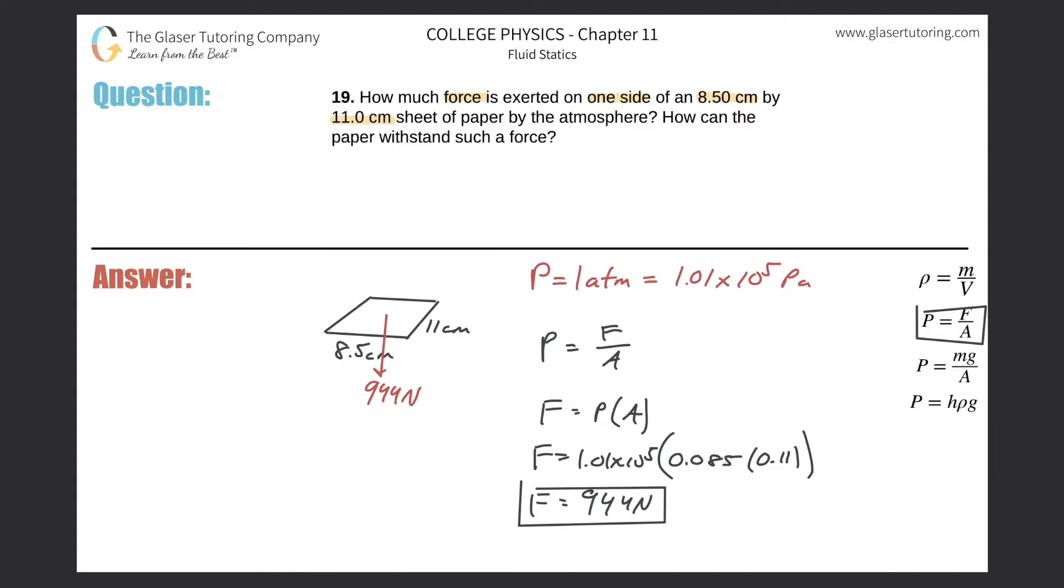Now you might be saying, well wait a minute, this thing's a sheet of paper. 944 newtons is like 100 kilograms, right? That'd be like me hanging on the piece of paper. I don't think the piece of paper is going to hold up. So that's basically the second part here. It says, how can the paper withstand such a force?